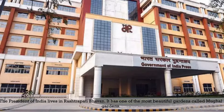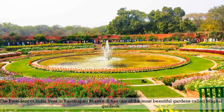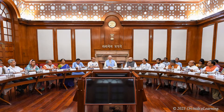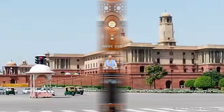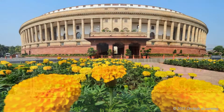All the main offices of the government of India are located in New Delhi. The President of India lives in Rashtrapati Bhavan. It has one of the most beautiful gardens called Mughal Gardens. The Prime Minister's office is in the South Bloc. Other departments of the Indian government work from buildings around the South Bloc. The sessions of the Lok Sabha and Rajya Sabha are held in the Parliament House.